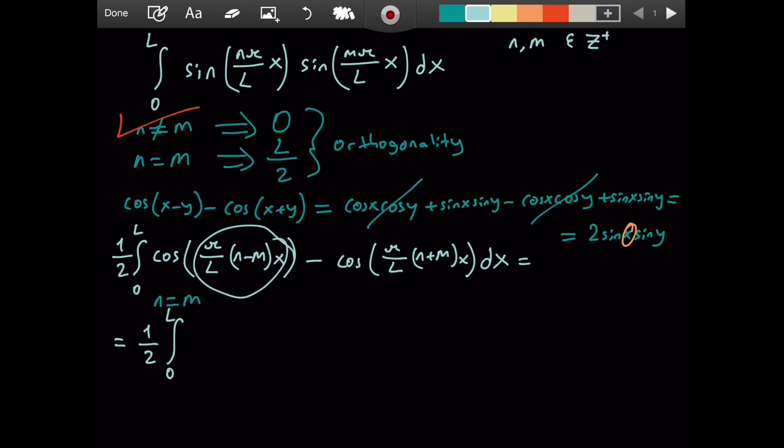Because n minus m gives you 0, since they're equal. So the question becomes, what is cosine of 0? It is 1. And then a minus cosine of, we have n plus n, which is 2n or 2m. But I will choose to call it 2n. So it will become 2 pi nx over L. And then dx. Let's just take this integral. We have 1 over 2, x minus L over 2 pi n sine of 2 pi nx over L. And the boundaries.